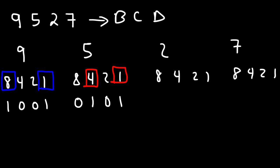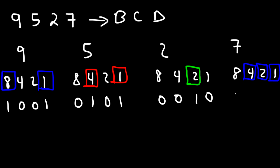To get 2, it's going to be 0010. And to get 7, we need to add up 4 plus 2 plus 1, so 7 is going to be represented by the 4-bit binary code 0111.